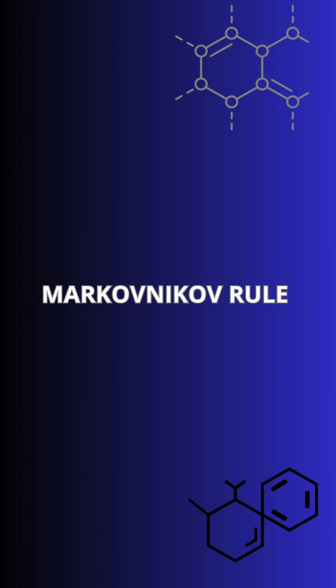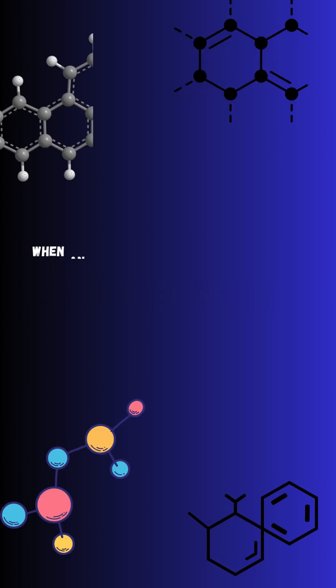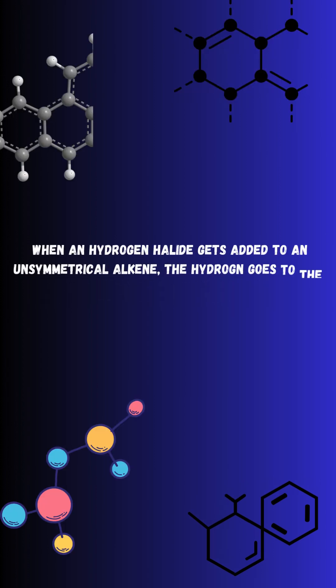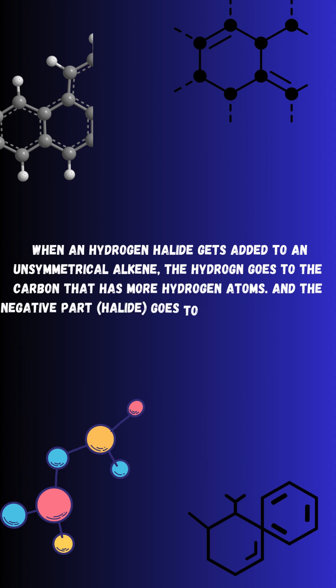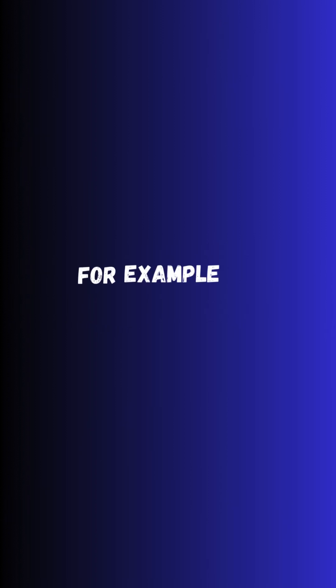Let's study Markovnikov's rule. According to the rule, in addition of a hydrogen halide to an unsymmetrical alkene, the hydrogen gets added to the carbon with greater number of hydrogen, and the halide part to the carbon with lower hydrogen on either side of the double bond.